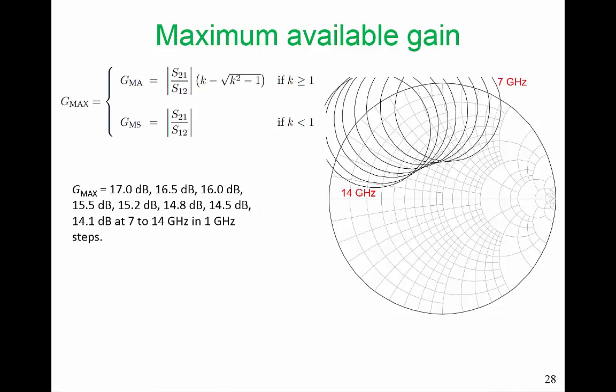For maximum available gain, we do have a little issue, because sometimes our amplifier does not have a maximum available gain because it would be unstable. CAD tools generally define Gmax, which is the maximum available gain when we have stability, but when the circuit is unstable, Gmax is just equal to Gms.